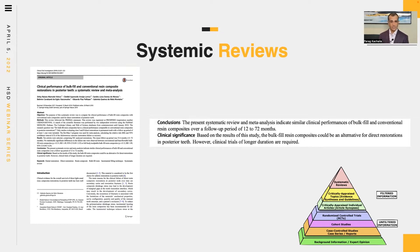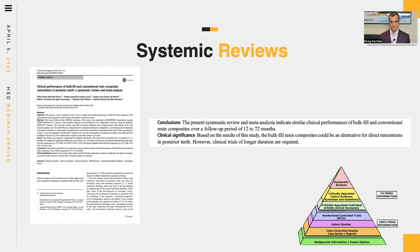Looking specifically at conventional composites versus bulk fill, a systematic review and meta-analysis examined the clinical performance of bulk fill and conventional resin composite in posterior teeth over a 12 to 72 month follow-up period. The paper concluded that bulk fill resin composites could be an alternative for direct restoration in posterior teeth, though clinical trials of longer duration are required. The data shows little difference over the one to six year period. For amalgam we have 50-plus years of clinical evidence; with bulk fill resin we're not quite there, but the trend is in the right direction.